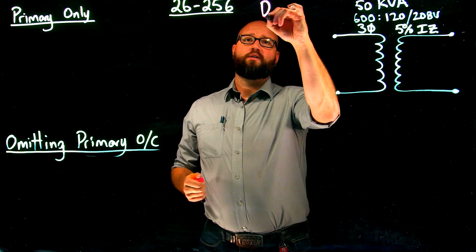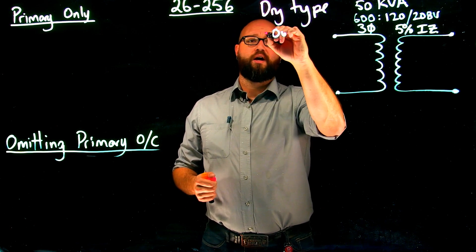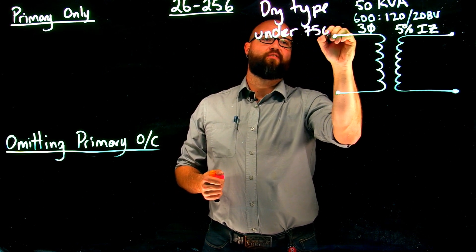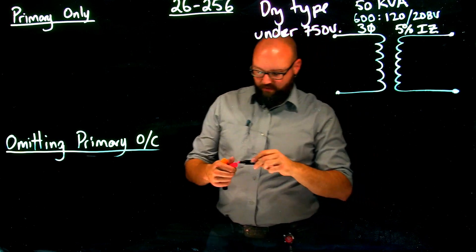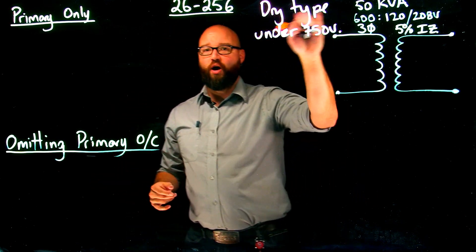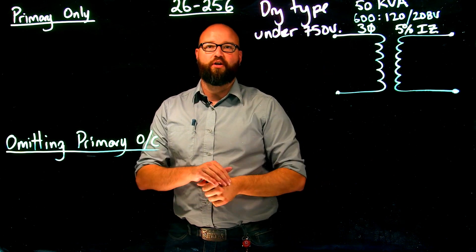which is our dry type transformer under 750 volts. So in the previous video, we looked at over 750 volts, which was not specific to dry or other than dry type. This one is specific to dry type under 750 volts.